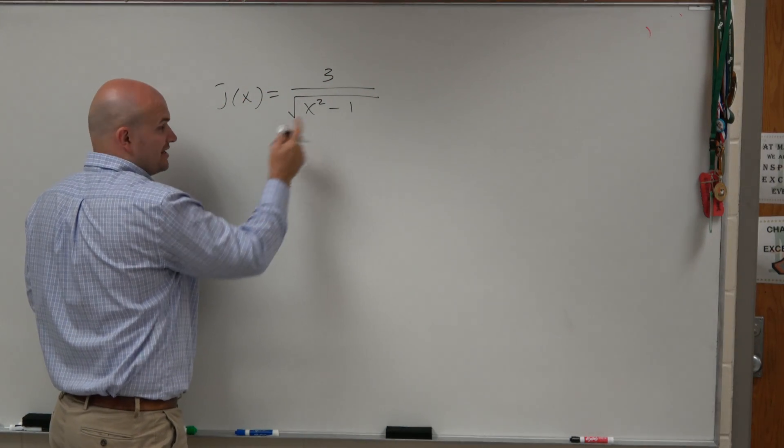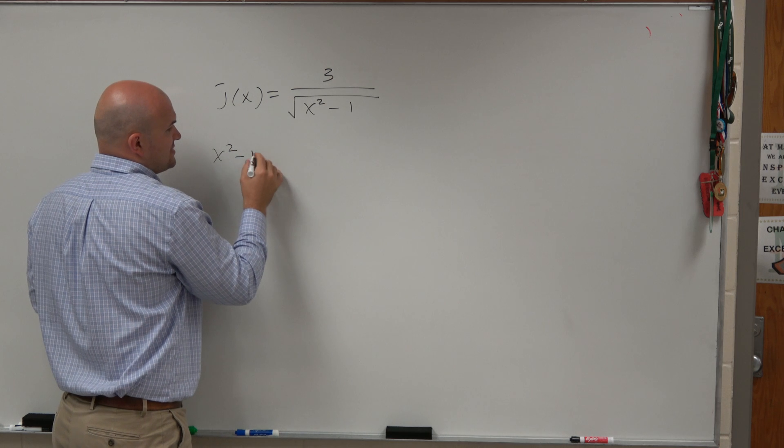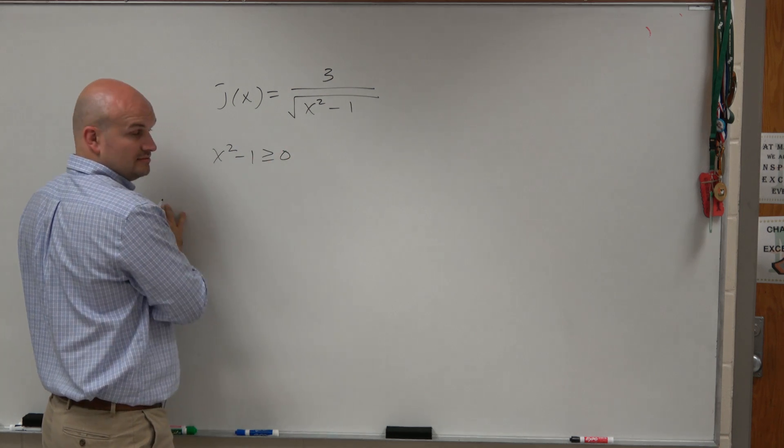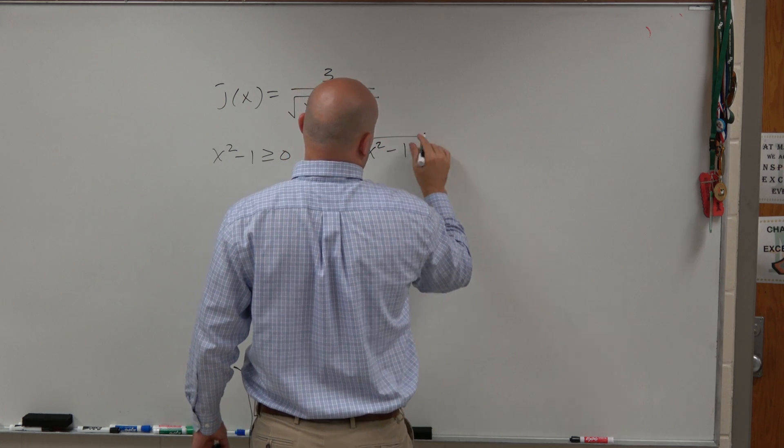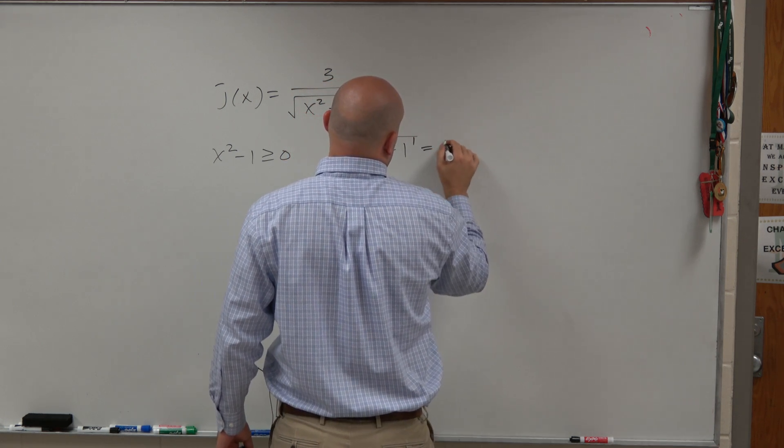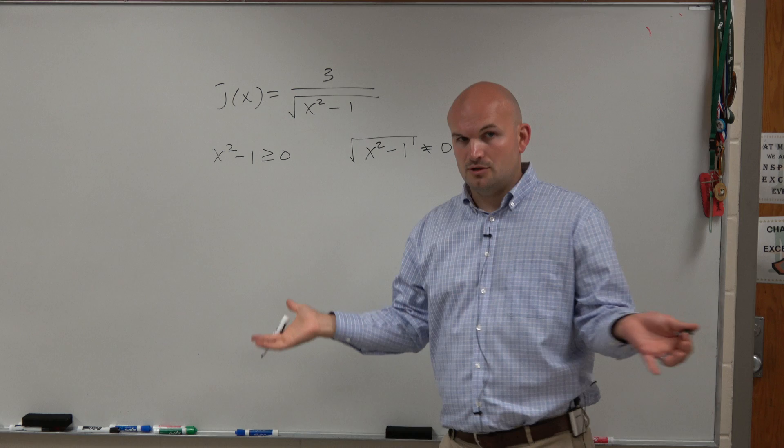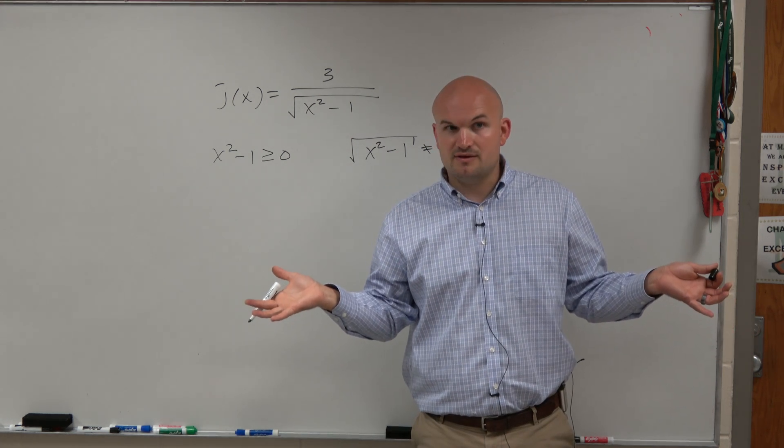So first constraint, we have a radical. x squared minus 1 has to be greater than or equal to 0. The other constraint is whatever's in the denominator, x squared minus 1 cannot equal 0. Those are your two constraints. Everybody follows?